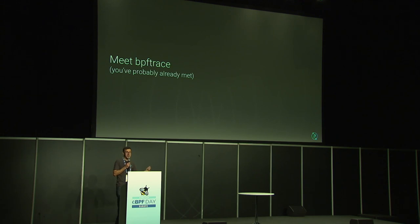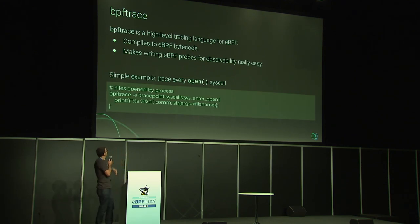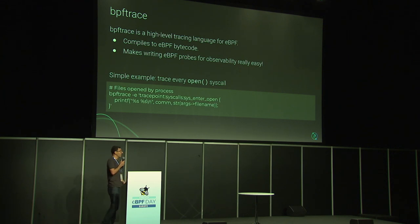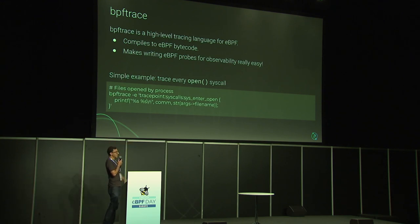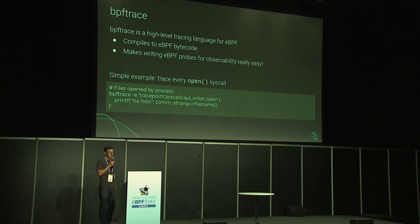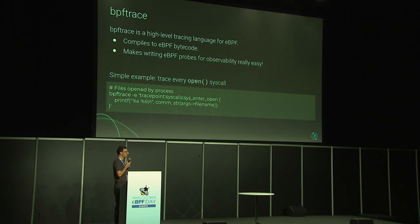Let's meet BPF Trace, in case you haven't met it before. BPF Trace is a high-level tracing language for eBPF. It makes it really easy to write eBPF programs. As a very simple example, if you wanted to trace every open syscall in your system on your host, it's essentially a one-liner. You specify the trace point — syscall sysenter open — then say what you want to do whenever that event occurs. Here we'll printf and print out the commands that triggered that syscall and capture the filename being opened. If you run this on your terminal, it'll start printing out every single syscall open that you see. Really powerful.